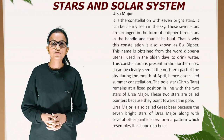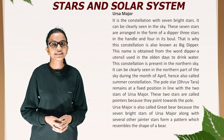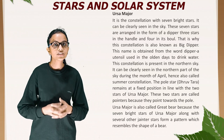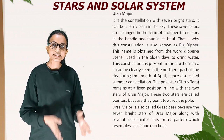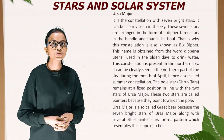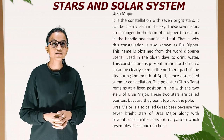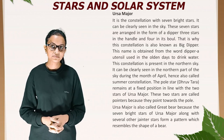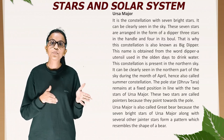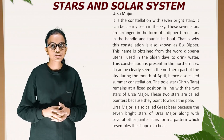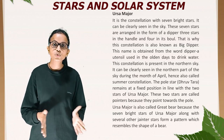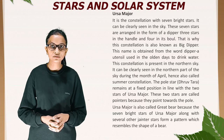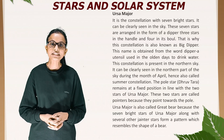Ursa Major is a constellation with seven bright stars clearly visible in the night sky. These seven stars are arranged in the form of a dipper — three stars in the handle and four in its bowl — which is why it is also known as the Big Dipper. This constellation is present in the northern sky and can be clearly seen during the month of April, hence it is also called a summer constellation. The Pole Star (Dhruvatara) remains at a fixed position in line with the two stars of Ursa Major called pointers, because they point towards the pole. Ursa Major is also called the Great Bear because its stars form a pattern resembling the shape of a bear.